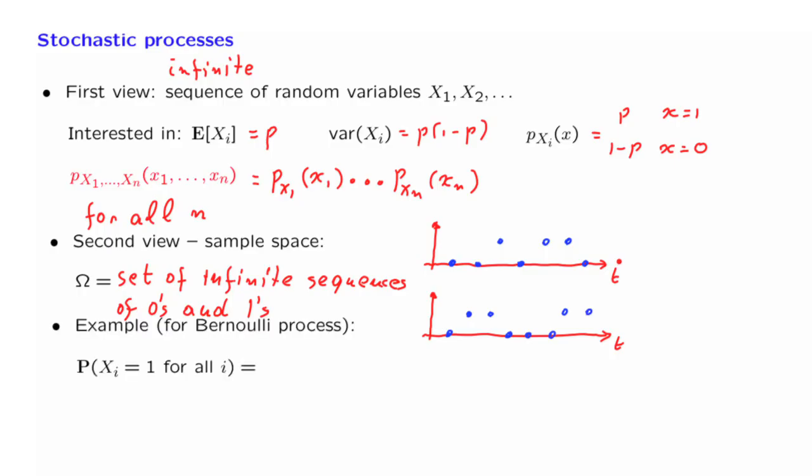Here's one particular kind of question we might want to answer. What is the probability that all of the Xi's turn out to be one? Notice that this is an event that involves all of the Xi's, not just a finite number of them.